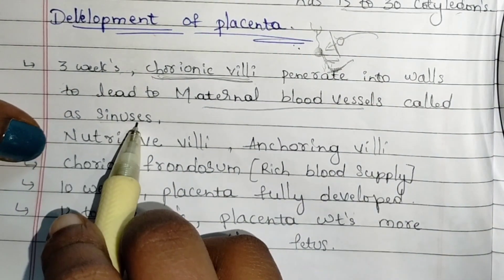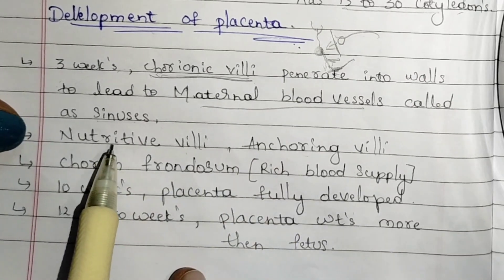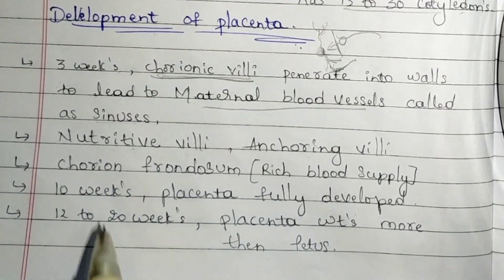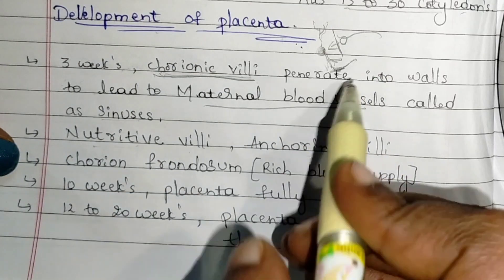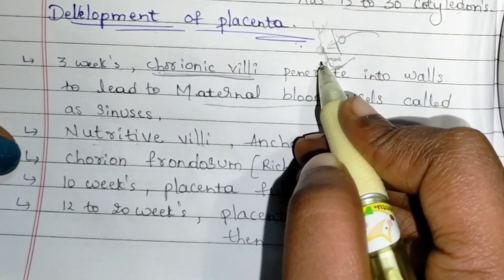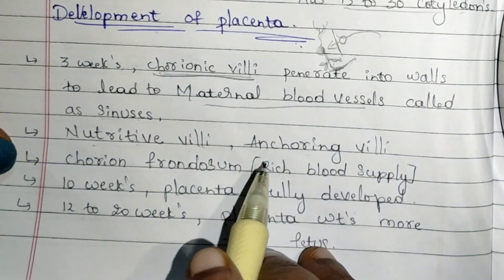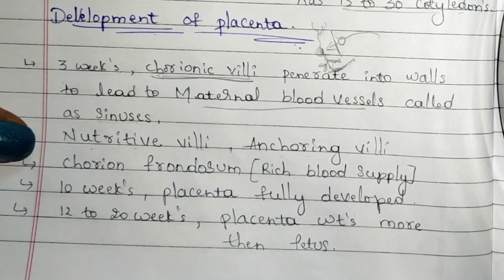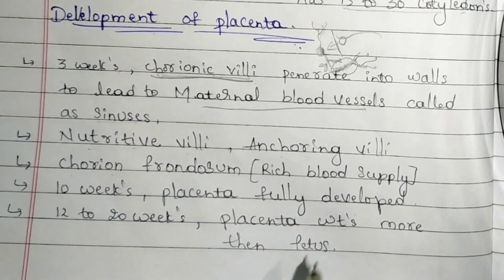After finding the maternal blood supply, both get connected. This connection is known through nutritive villi and anchoring villi. The villi that obtain nutrition are called nutritive villi, and the smaller sub-connected villi that support the main junctions are known as anchoring villi.